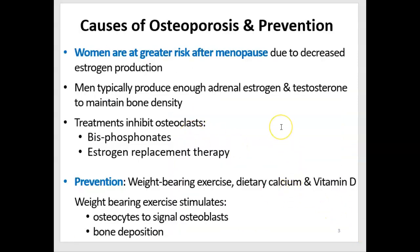Causes of osteoporosis vary, but the most common cause is menopause in women. Women are at greater risk after menopause because their ovaries are no longer producing estrogen. They still have some estrogen production by the adrenal gland, as do men. Men typically produce enough adrenal estrogen and they make testosterone lifelong, so the testes function producing testosterone for the rest of their lives, and that is enough to maintain bone density.